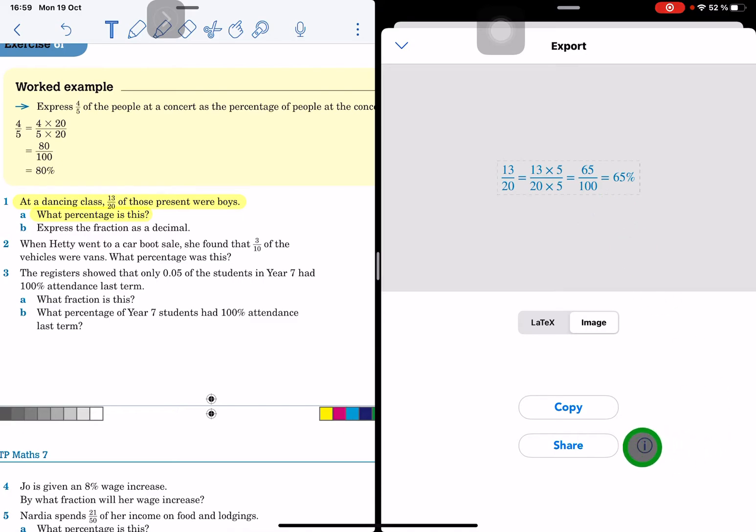I can change all of this in this little info button and I can choose whether I want this as an image into Notability or LaTeX formula. At this stage for primary and secondary I choose image.